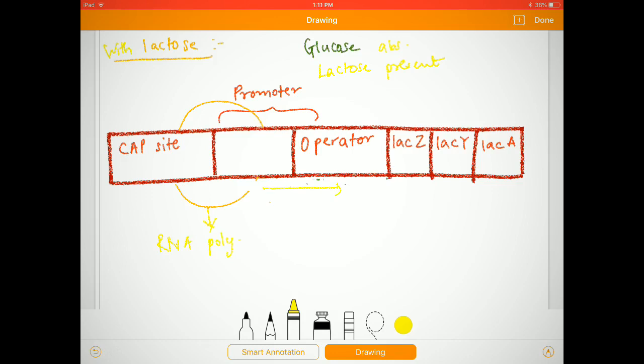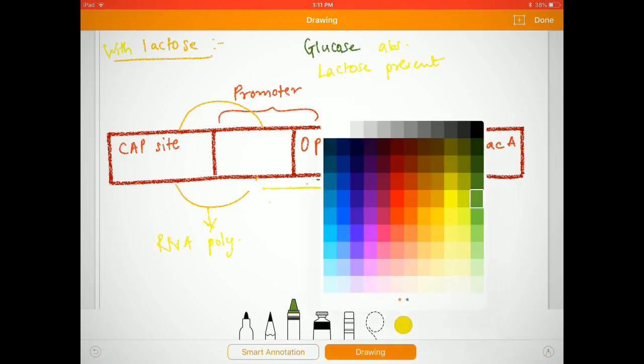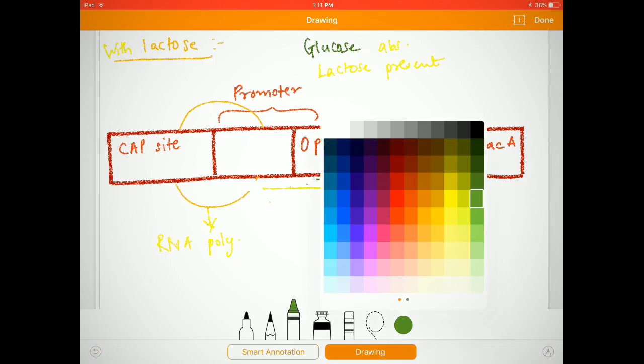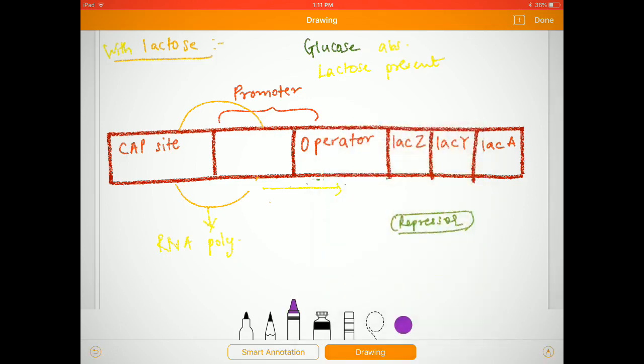The repressor region which is present in the operator part—the repressor will come off of the operator region, and the transcription can take place.